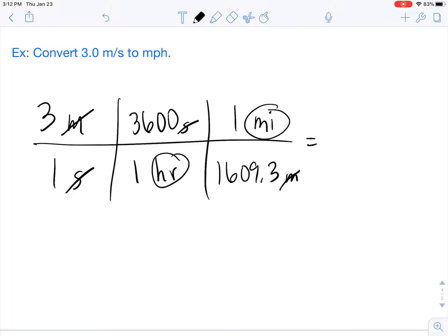All we have to do at this point is our calculations. What you're going to do is multiply everything that's on the top and divide it by everything that's on the bottom.